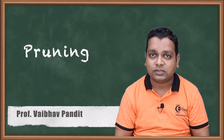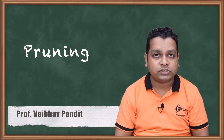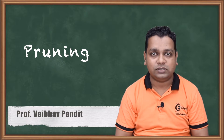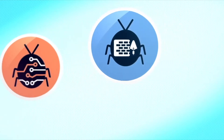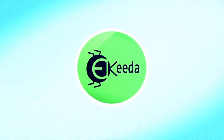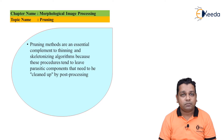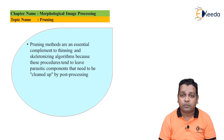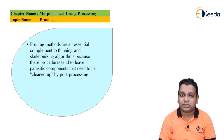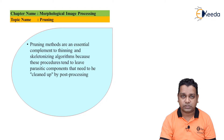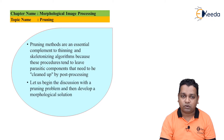With respect to thinning and skeletons, we have certain additional comments and possibilities of outputs with pruning. Pruning methods are very essentially the complements to the thinning operation and skeletonization algorithms we have covered, because these are the procedures to remove parasitic components that need to be cleaned up by post-processing.